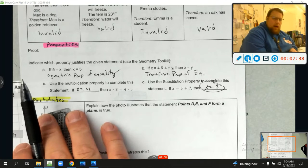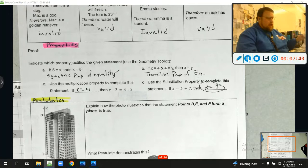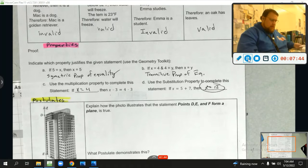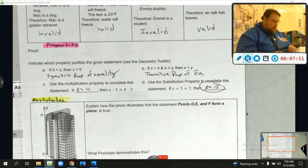So, that's how we use our properties to help us. At times we're going to be calling on properties to match them up or to use them to make logical leaps. So, now I want to go into some postulates, and you should have written these down. We have a whole document of postulates, and it says explain how the photo illustrates the statement points D, E, and F form a plane is true.